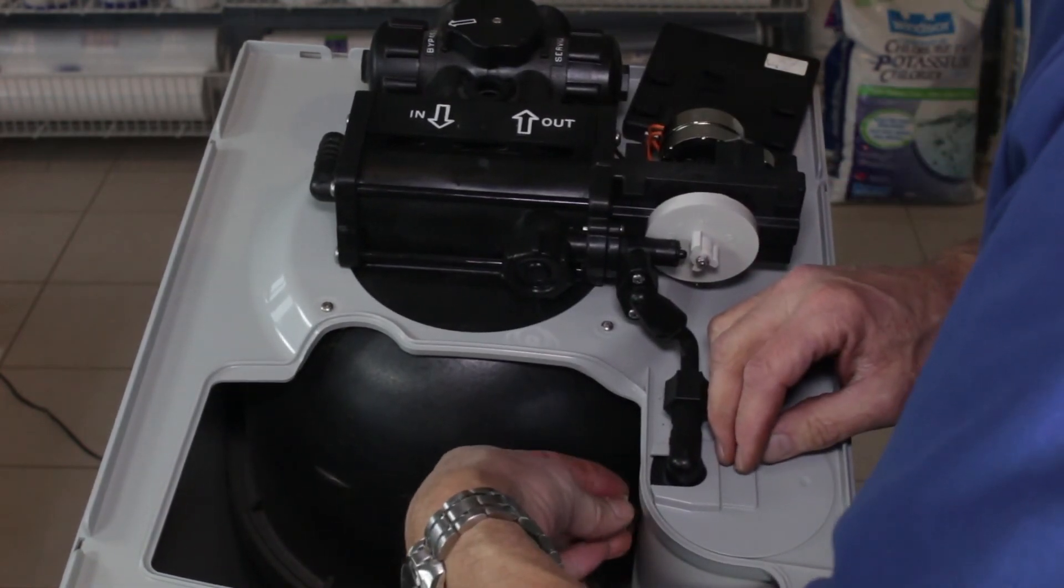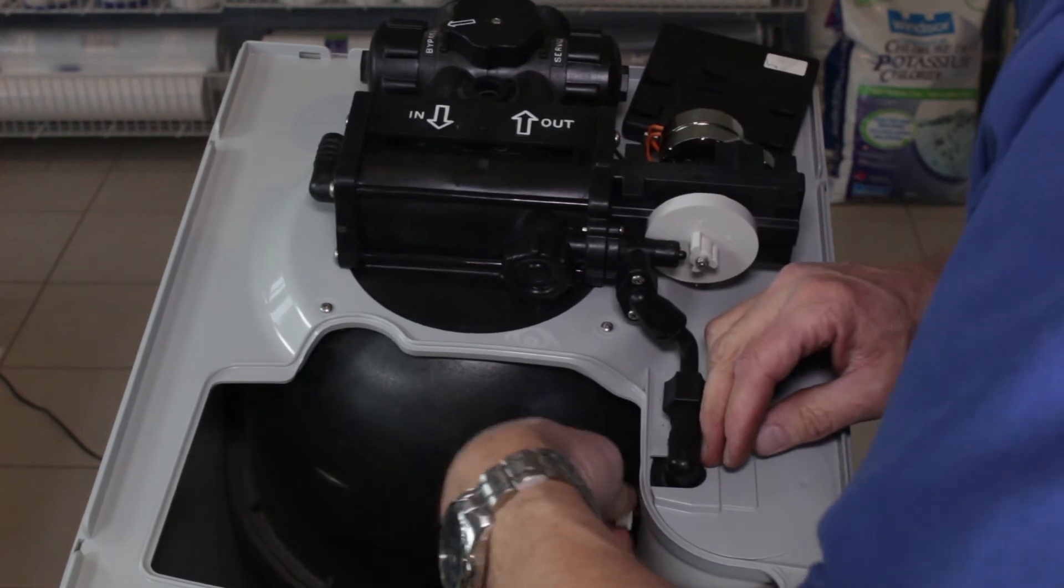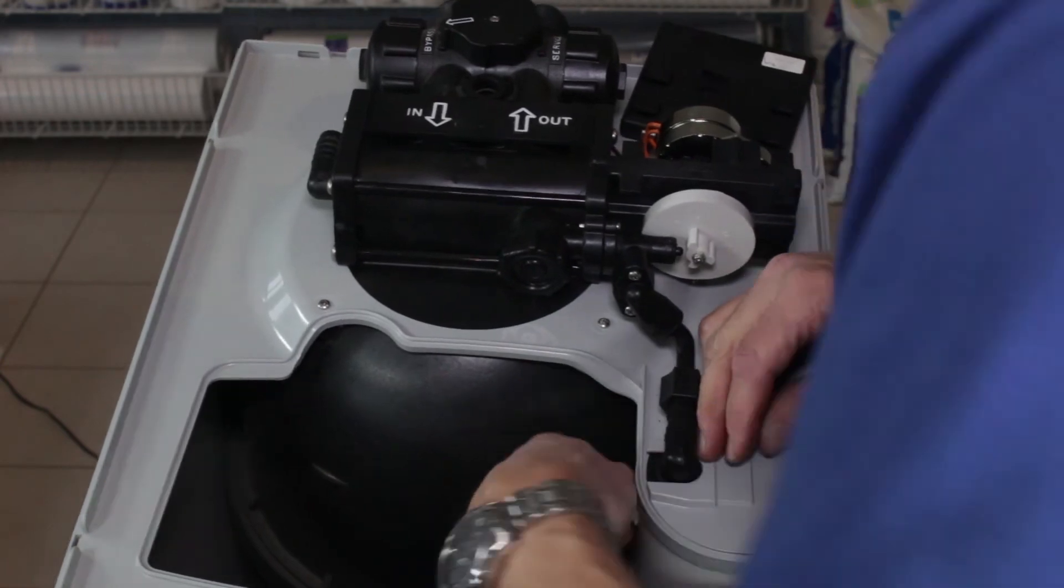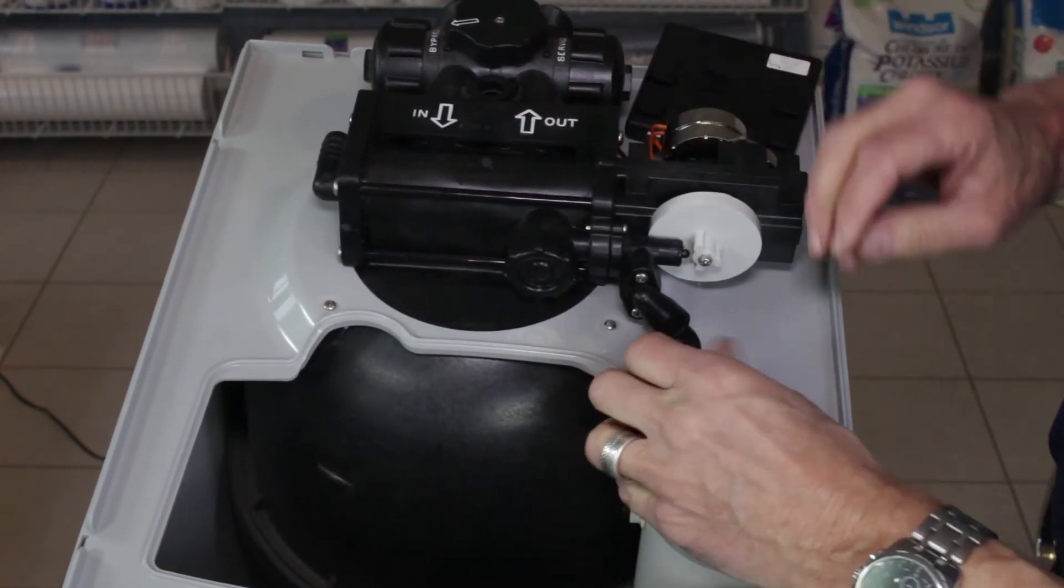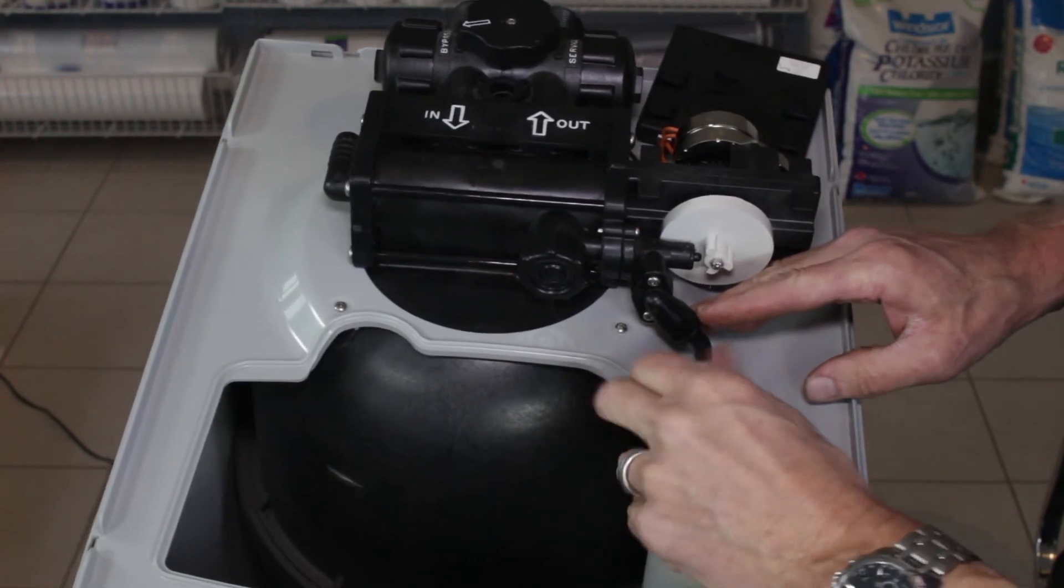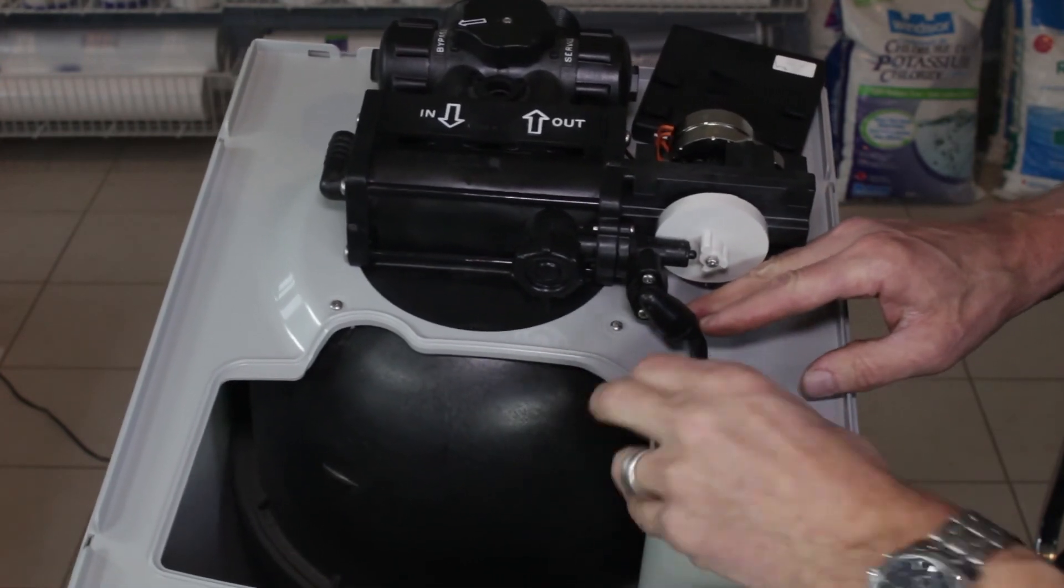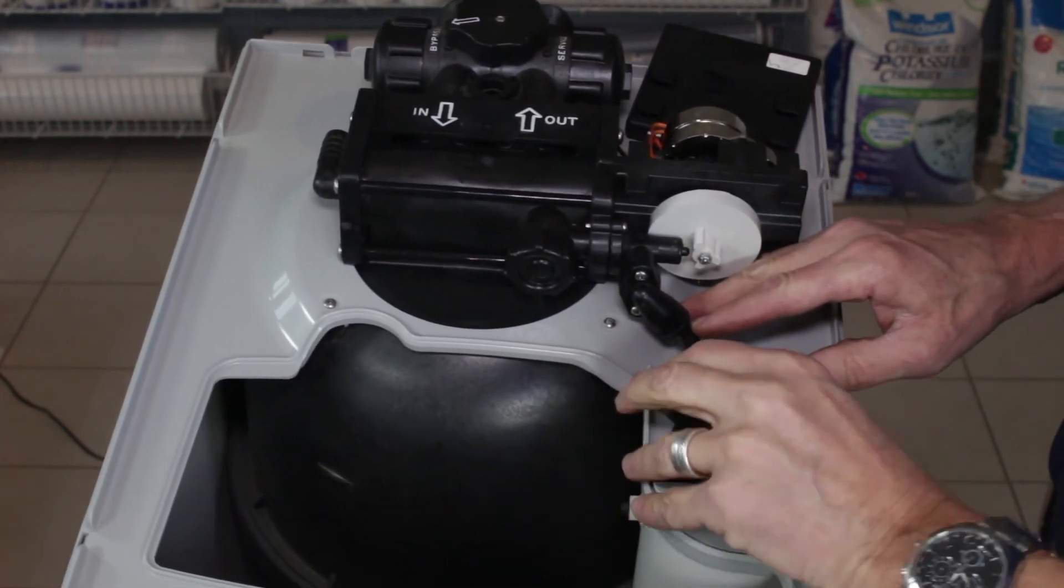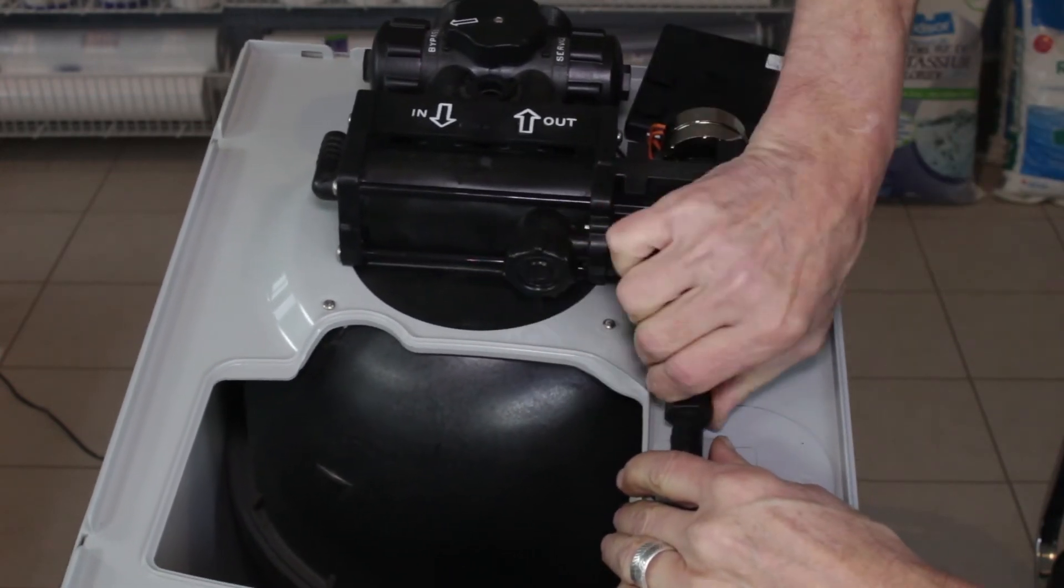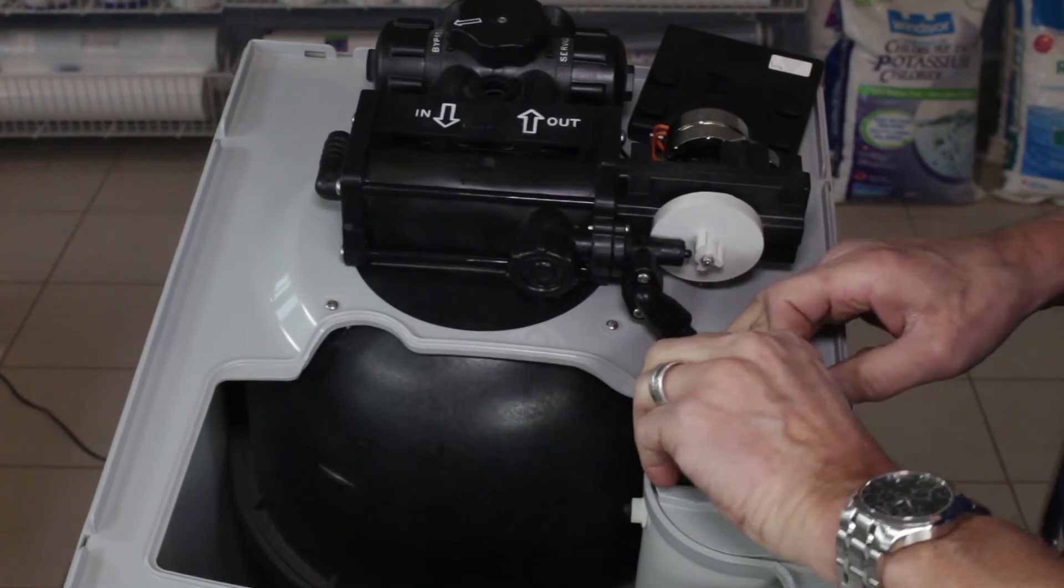Again, this is the hex nut that holds the float in place, so we can put that hex nut back on there. Hand tight is typically tight enough. And same with this brine connection here—it needs to be hand tight, but a tight hand tight. So if you're in doubt, tighten it by hand as best you can, then give it a little bit more with a pair of pliers or a wrench to make sure it doesn't leak.